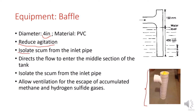A T-baffle will also isolate the scum from the inlet pipe. Without the inlet T-baffle, the flow of incoming sewage would pour on the top of the scum layer, causing that layer to harden and preventing new solids from settling. Instead, solids would build up on the top of the tank and block the incoming flow, causing a serious problem. So basically, the inlet T-baffle redirects the flow to enter the middle section of the tank. The baffle will also allow ventilation for the escape of accumulated methane and hydrogen sulfide gases, getting rid of dangerous and smelly gases.